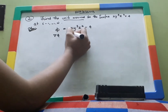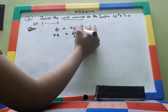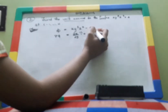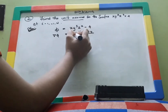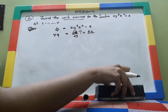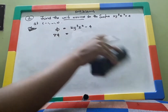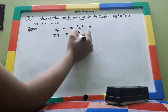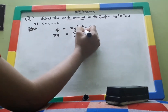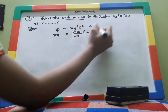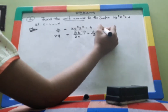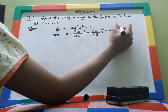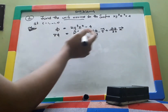We are going to find the gradient of ψ. The gradient formula is: del ψ = (∂ψ/∂x)î + (∂ψ/∂y)ĵ + (∂ψ/∂z)k̂. This is the formula we found in the introduction.